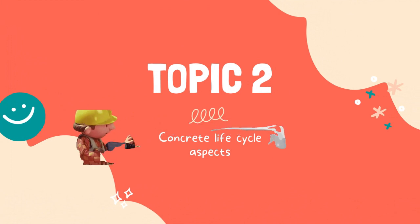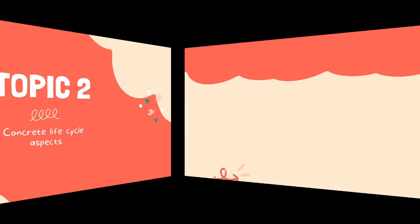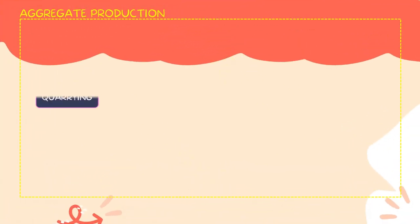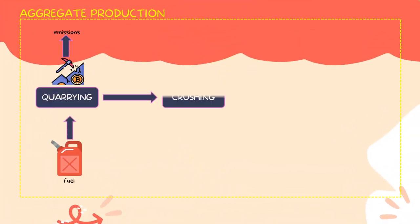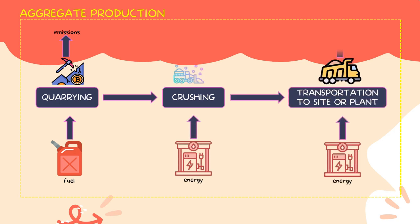We continue with Topic 2 on concrete life cycle aspects. First, we look at aggregate production of cement because around 70 to 80% of concrete comes from raw materials. In the first step, it starts with quarrying to extract limestone from a site to get the raw material. Next, it goes to crushing to make the limestone into a smaller texture before transportation to the site or plant. All of these processes require a lot of fuel and energy and produce emissions to the environment.